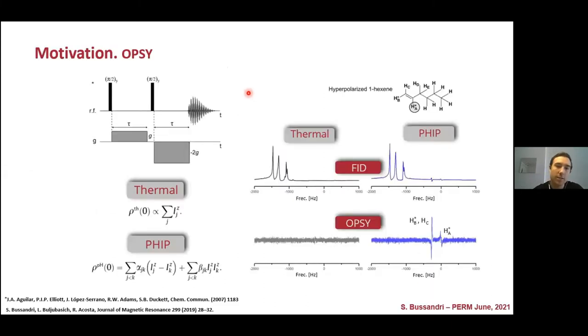As you know, in certain cases, thermal signals could hide polarized peaks that are of our interest. In this regard, the OPSY sequence was released years ago as a great alternative to a single pulse acquisition. It acts as a double quantum filter, which removes all the contribution from single quantum terms representing thermal signals.